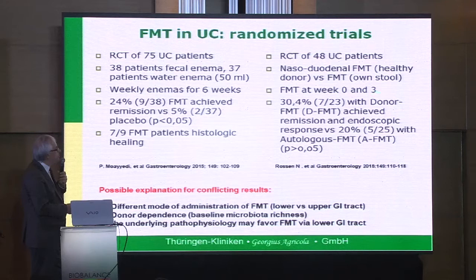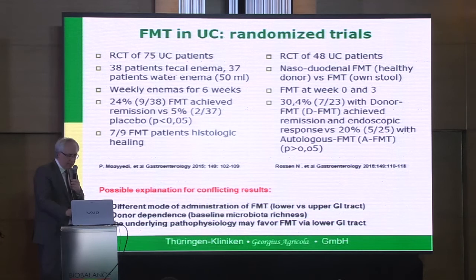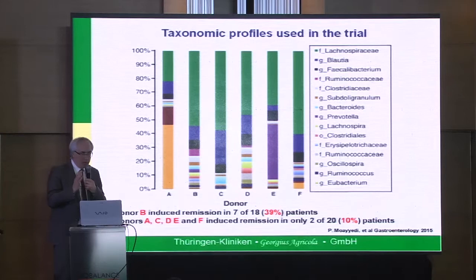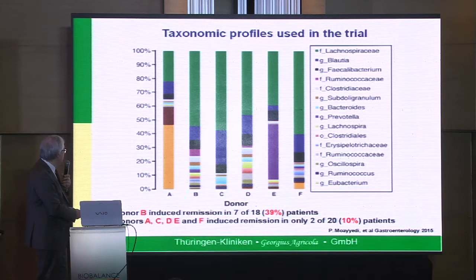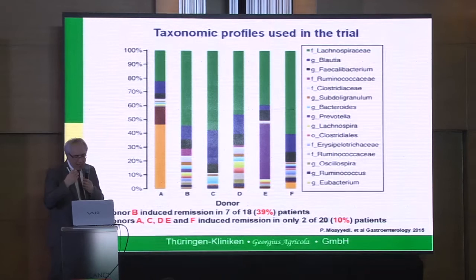The possible explanation of these conflicting results is a different mode of administration, and the donor dependence — I think this is the most important aspect. If you want success in FMT, you need a good donor. In the American study, clinical remission was 25% and clinical response almost 40% after repeated FMT via enema. But looking at different donor profiles, patients with ulcerative colitis who received stool from donor B had remission of 39%, while other donors achieved only 10%. So we have to learn more about the significance of donor selection.